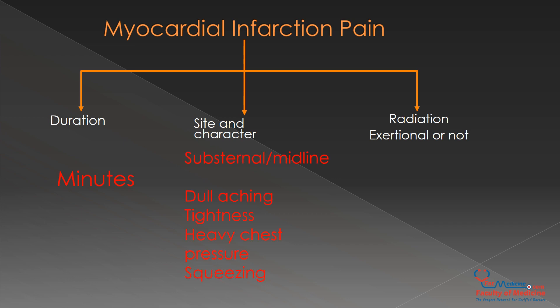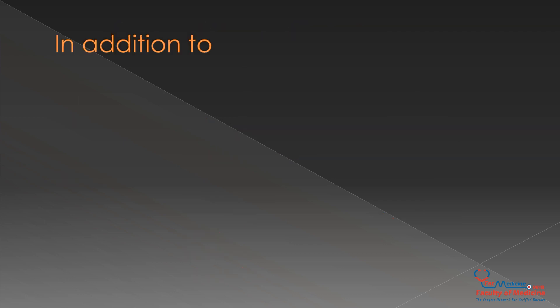The site is substernal or midline, and the character of the pain is usually dull aching, tightness, heavy chest pressure, or squeezing. This pain radiates to the arms or jaw and is of an exertional type, meaning when the patient is doing physical activity he feels the pain the most, or he had this attack of pain just after doing physical activity.